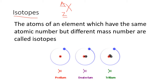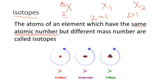Isotopes are nuclei which have the same atomic number. Suppose you have two elements X1 and X2: if X1 has one proton, Z equals one, and X2 also has one proton, then Z equals one. If these two elements have the same atomic number but different mass number, such nuclei are called isotopes.